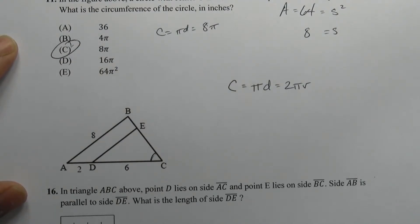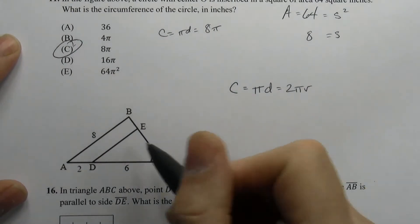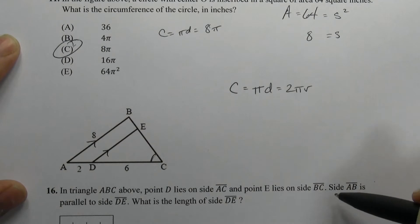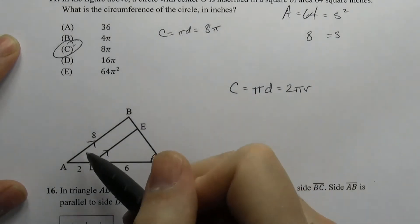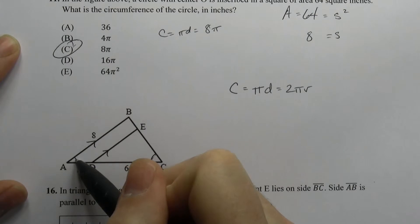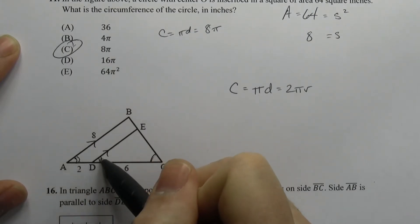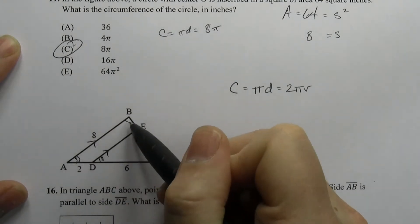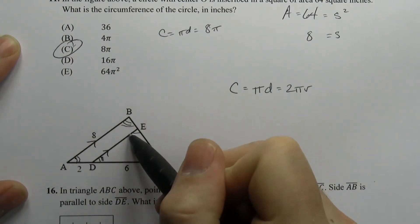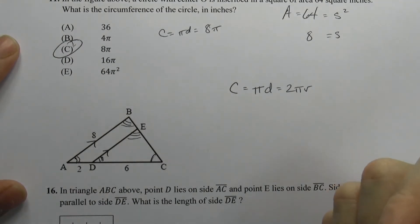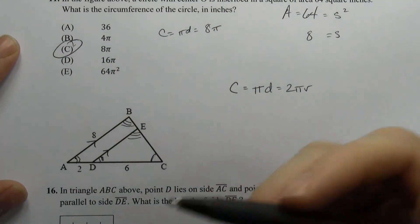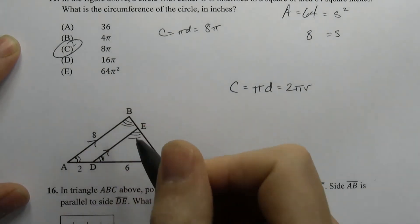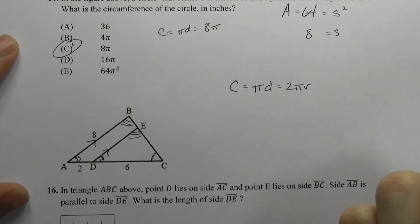Look for more angles they share. Since AB is parallel to DE, this angle and this angle are equal — corresponding angles from the parallel lines. If those two pairs of angles are equal, then the third angles must be equal too. Triangles with three equal angles are similar, so this small triangle is similar to the big triangle, meaning their sides are proportional.